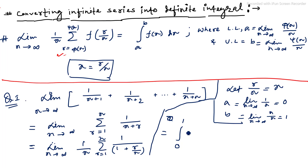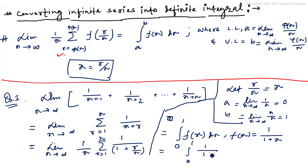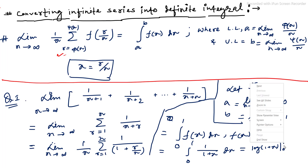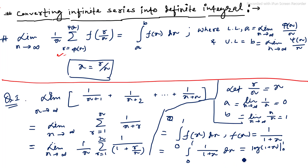Since x = r/n, the function f(x) = 1/(1+x). So the definite integral becomes ∫₀¹ 1/(1+x) dx. The integral of 1/(1+x) is log(1+x), evaluated from 0 to 1, which gives log 2 minus log 1.